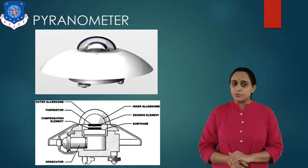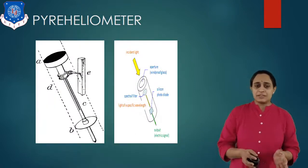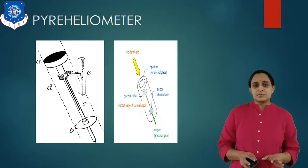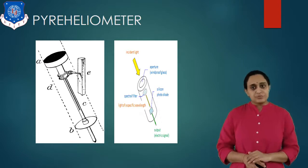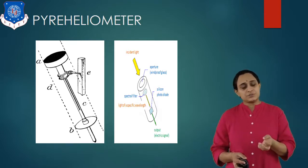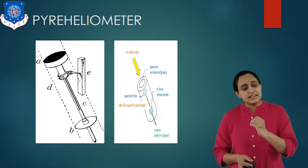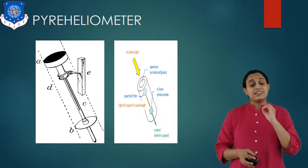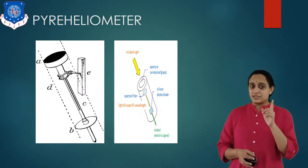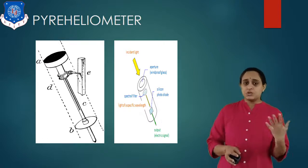Now let us look at the periheliometer. There are two diagrams — one is a schematic and the second is the basic structure. It works on a similar principle to the pyranometer. The temperature difference between black and white surfaces absorbs solar radiation, which produces an EMF proportional to the energy incident on the surface, allowing us to calculate data at each instant.